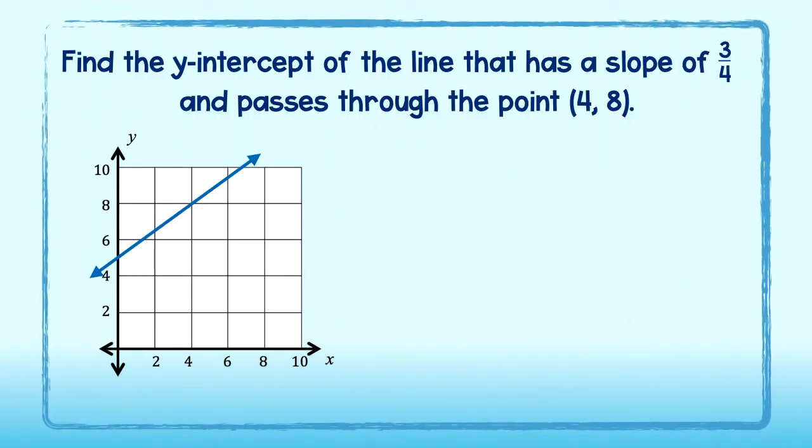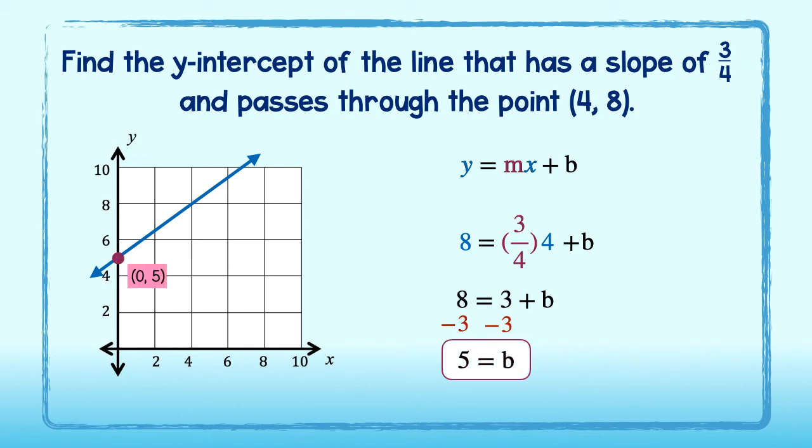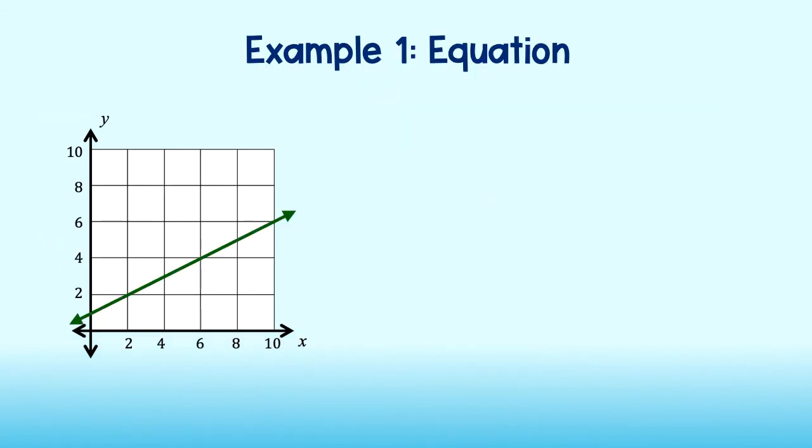Now you try. Find the y-intercept of the line that has a slope of 3 fourths and passes through the point 4, 8. Okay, remember, we first start with the general form of an equation in slope-intercept form, or y equals mx plus b. We can substitute 3 fourths for m, 4 for x, and 8 for y. Now we can solve for b. 4 times 3 fourths is 3. We subtract 3 from both sides to get b equal to 5. This means that the line passes through 5 on the y-axis. Great.